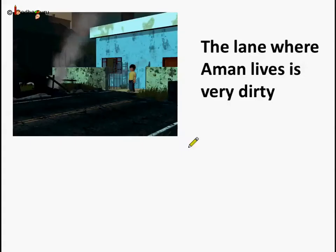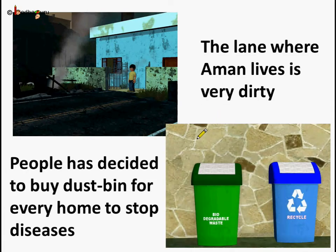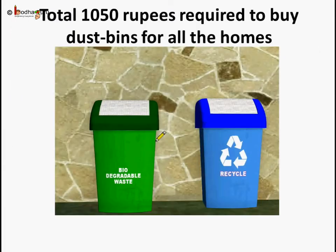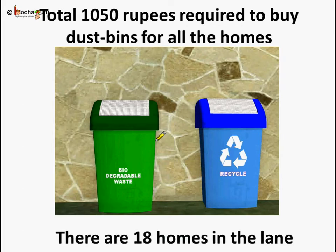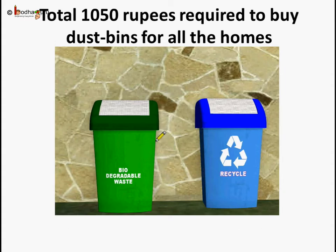Let's take another problem. Amman is a small boy. He lives in a lane which is very dirty. There is no dustbin in that lane. Previous year, in rainy season, heap of garbage beside the road became breeding ground of mosquitoes and those mosquitoes spread malaria, dengue-like diseases. So people in that lane decided to arrange dustbins for every home. There are 18 homes in that lane and the total amount of money required is 1050 rupees to buy the dustbins for all the homes.